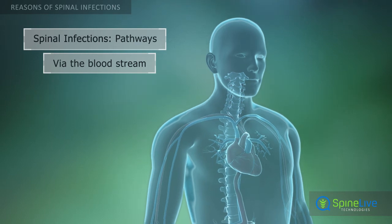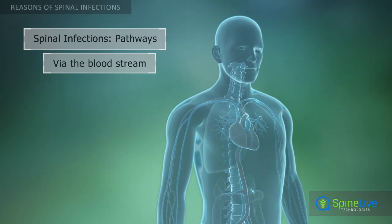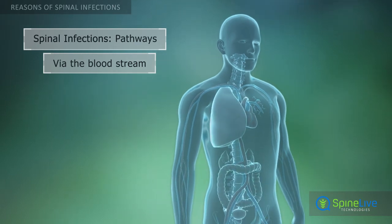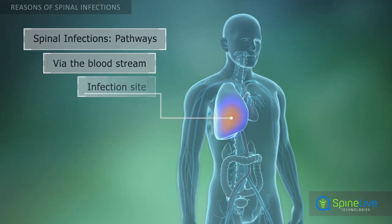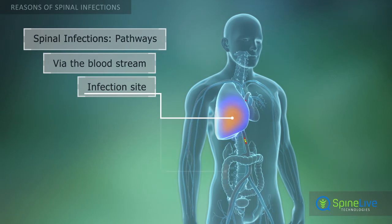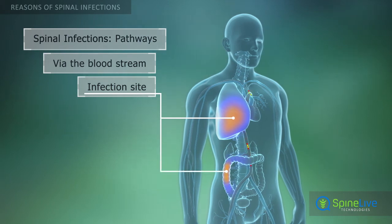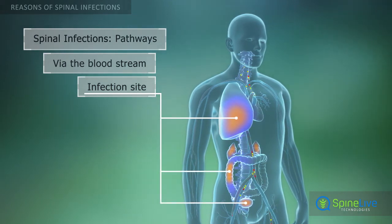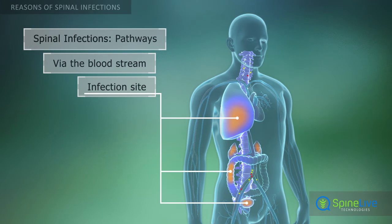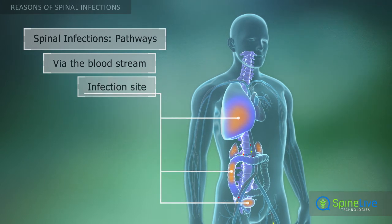A primary infection somewhere else in the body, like an infection of the respiratory, gastrointestinal, or urinary tract, can enter the bloodstream and spread to the spine.